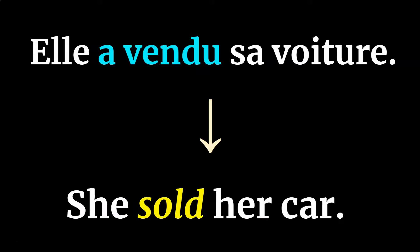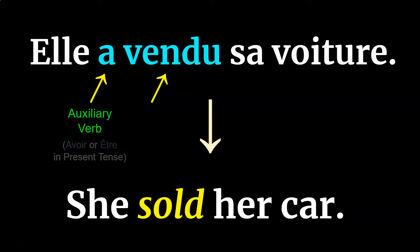The reason it's called le passé composé is that it's composed of two parts: the auxiliary verb or helping verb, which will either be avoir or être conjugated in the present tense, and then your main verb in its past participle form.